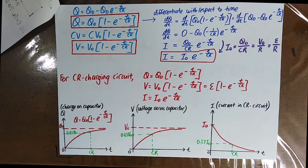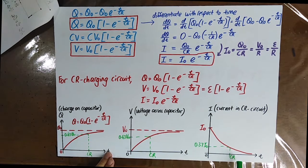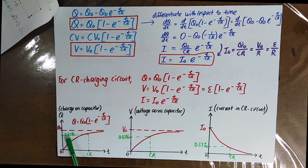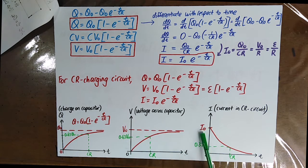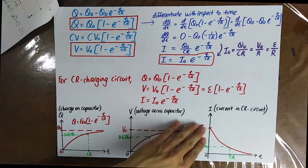After one time constant, Q becomes 0.63 Q0, V becomes 0.63 V0, and I becomes 0.37 I0.